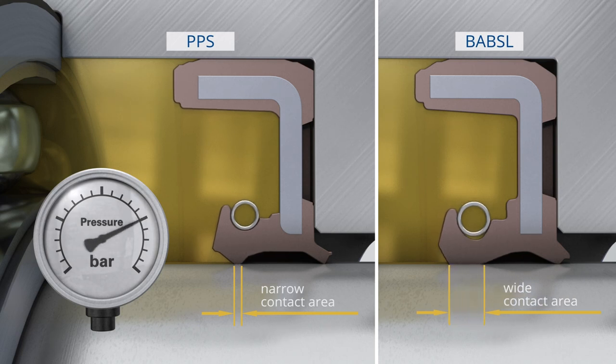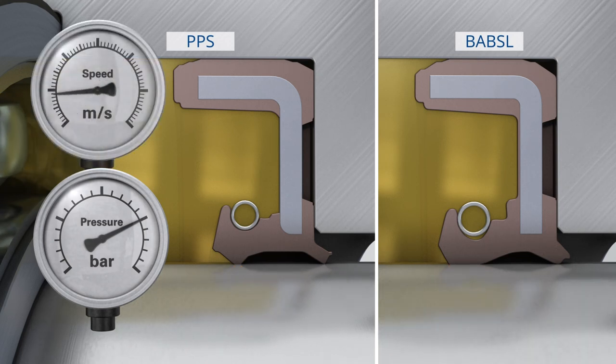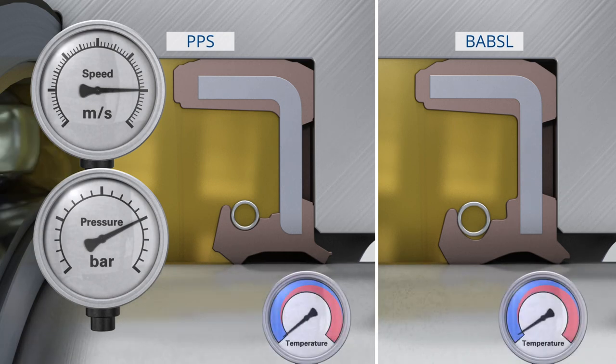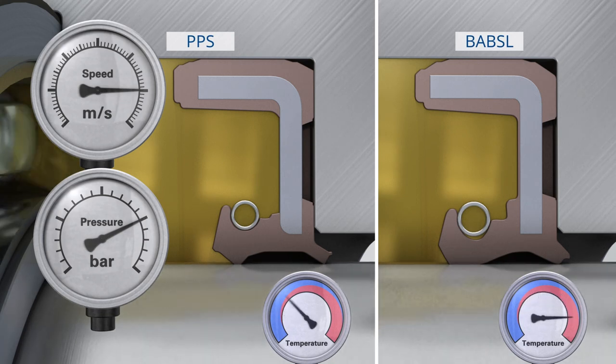In addition, the PPS shows a significantly lower friction-related temperature increase in the sealing gap under pressure load and at high speed compared to the BABSL type. The patented sealing lip profile is the reason for this. This characteristic significantly increases the service life and extends the application limits.